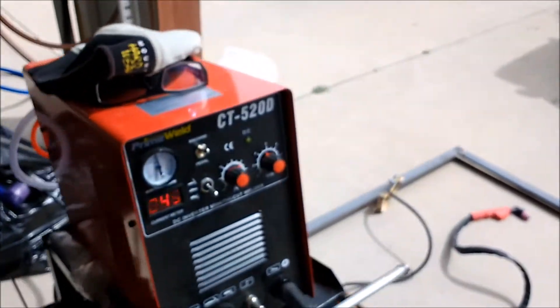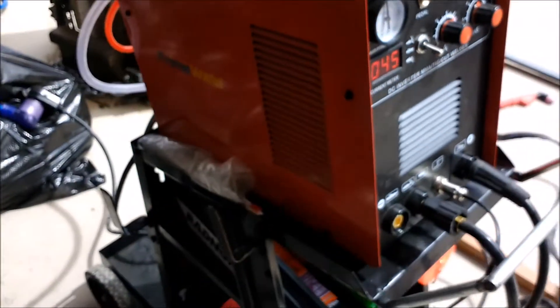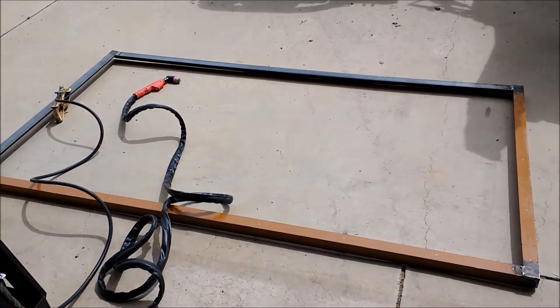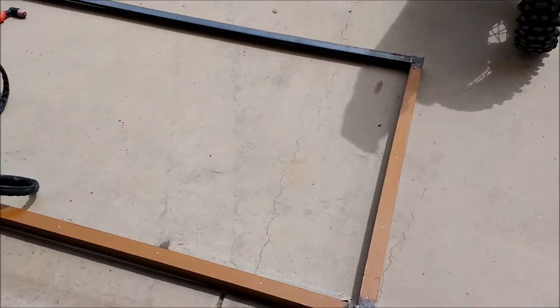Using this PrimeWeld CT520D again, I'm going to weld up three gates actually, two for the yard and one for the chicken house. So this is the chicken house one.